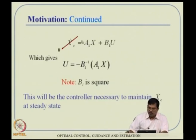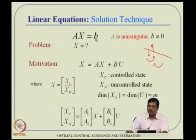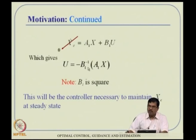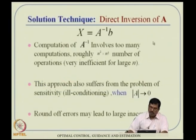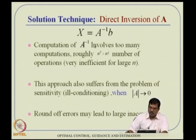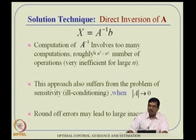We require efficient ways of getting this solution. Remember, this control has to be applied online, so we cannot afford large computational time computing B1 inverse. A inverse involves adjoint divided by determinant, and in computational complexity terms, it requires n² × n! computations. As A gets larger, we get trapped in this computational complexity. So we want an efficient way, such as Gauss elimination.